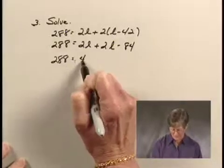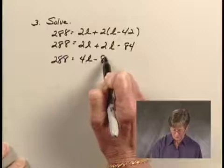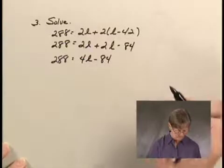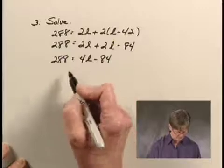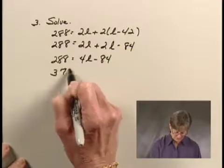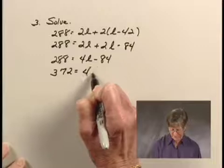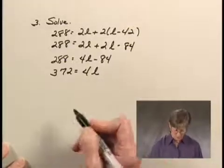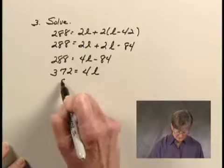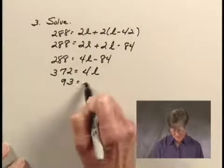Now I'm going to add the two L's together. I have 4L minus 84 on the right hand side. When I add 84 to both sides of this equation to get the L term alone, I get 372 equals 4L. And then finally I'm going to divide both sides of the equation by 4, and I get 93 equals L.